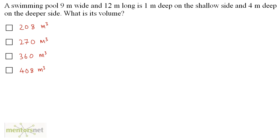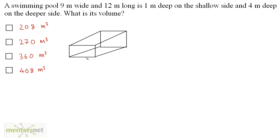A swimming pool 9 meters wide and 12 meters long is 1 meter deep on the shallow side and 4 meters deep on the deeper side. What is its volume? The width of this swimming pool is 9 meters and the length is 12 meters. At one end we have the height as 1 meter, and at the other end we have the height as 4 meters.